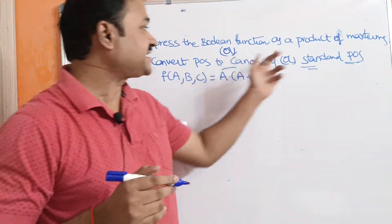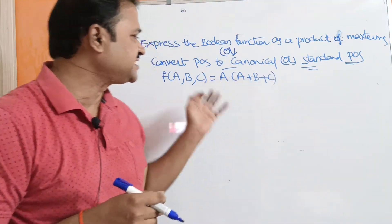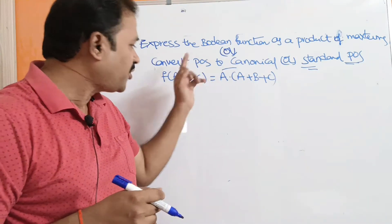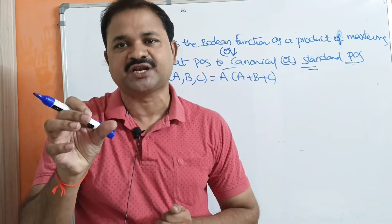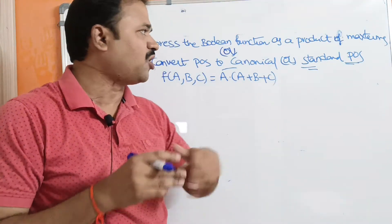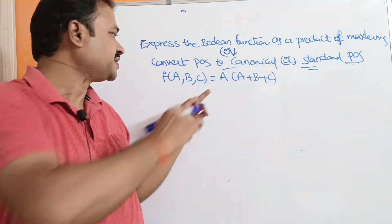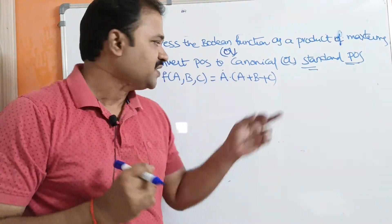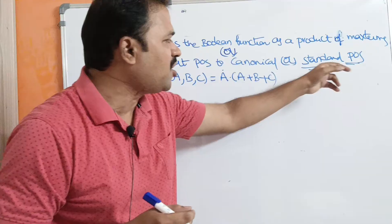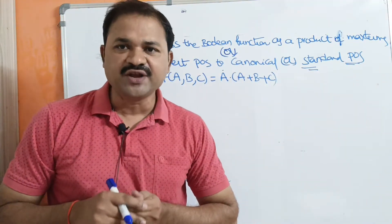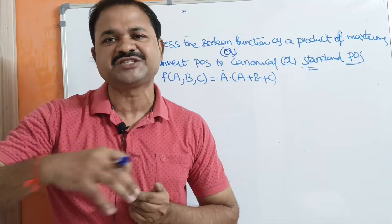Let us discuss expressing a boolean function as a product of max terms. Here we are performing a product operation on the max terms. Max term means we need to perform OR operation on the variables or literals, and each max term should contain all the variables. To convert to canonical or standard POS, each max term must contain all the variables.